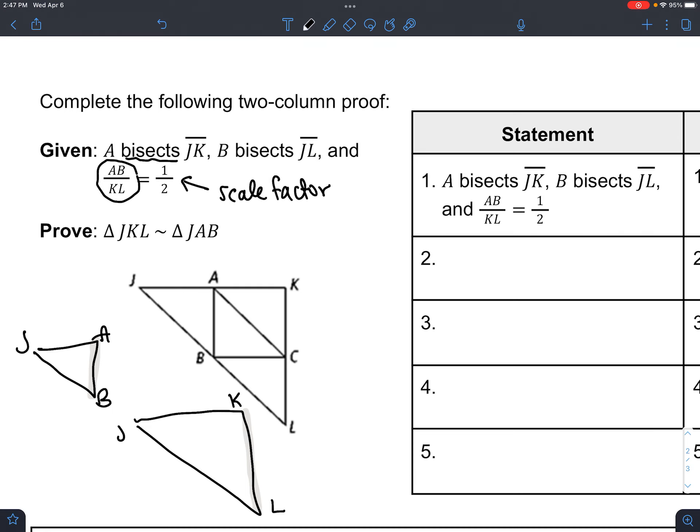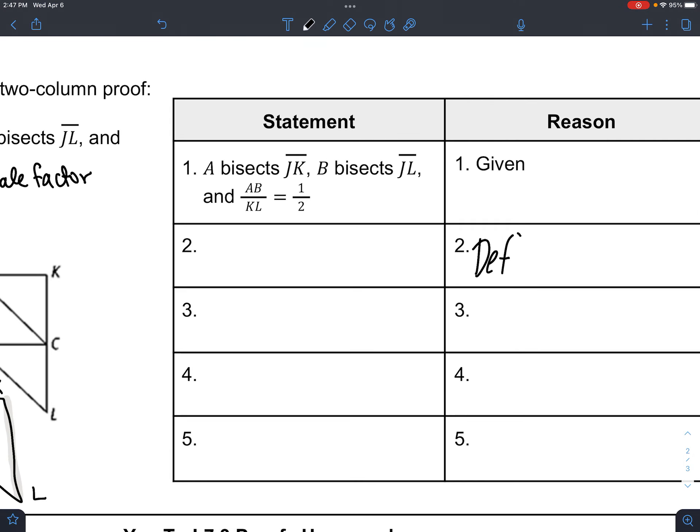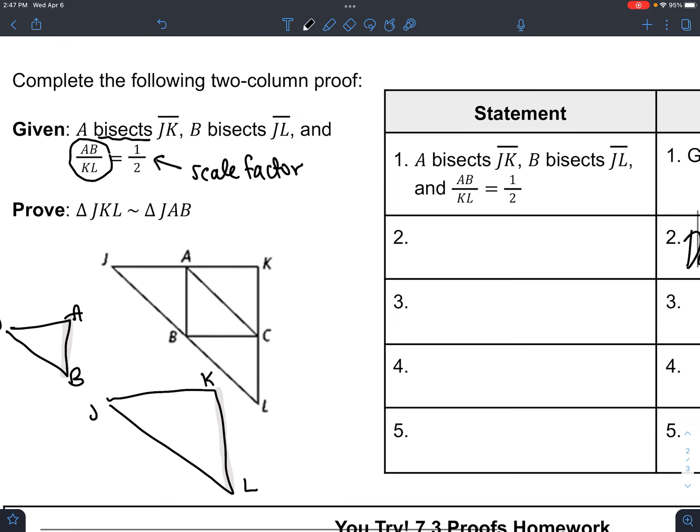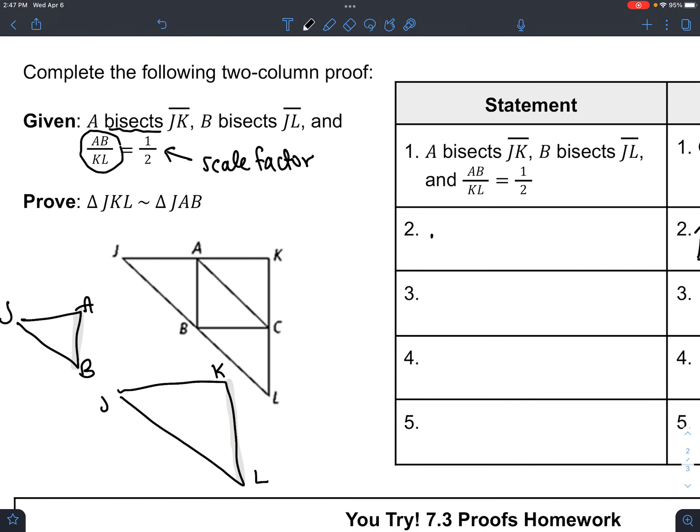So the only thing left to do is to understand what bisect means. So we will use the definition of bisect. And this filling is a little tough to do—I wouldn't expect you to just pull this out. But the fact we want is that JA, this length, is half of JK, because A is the midpoint. And in the same way, JB is half of JL.